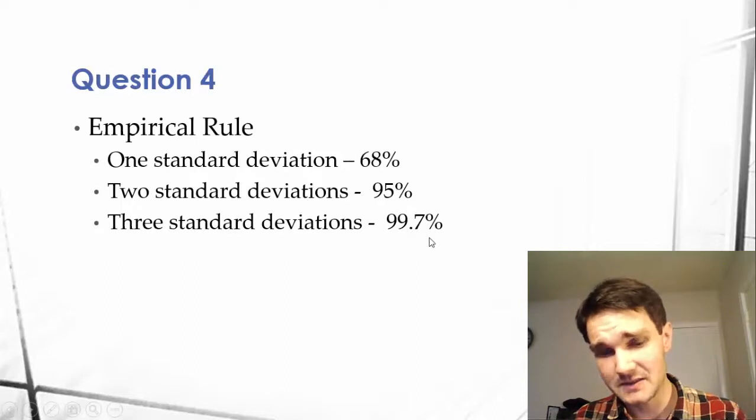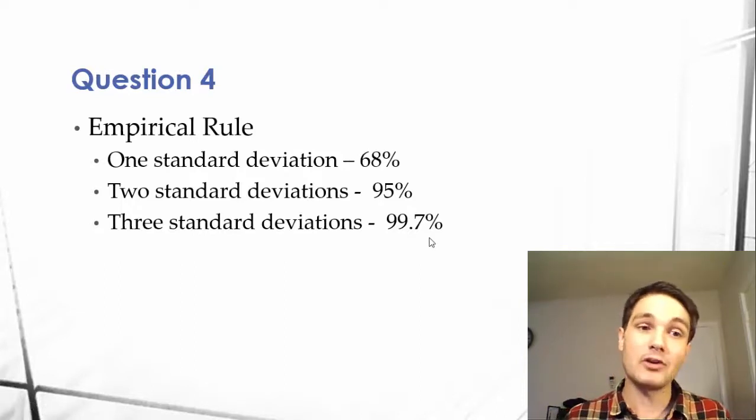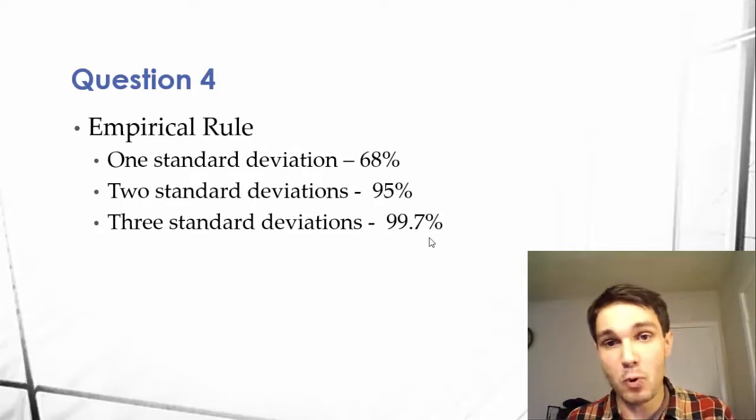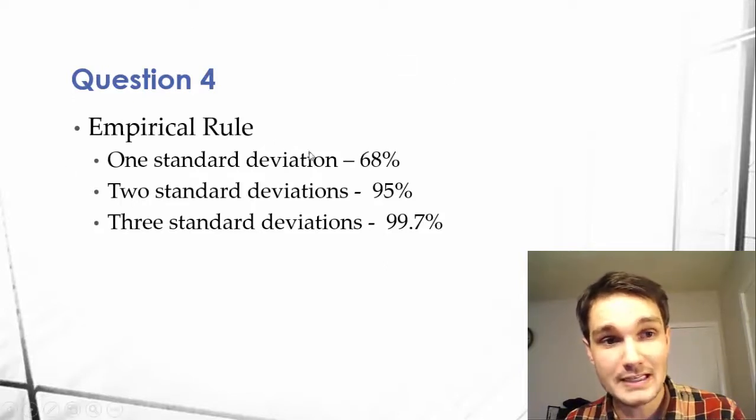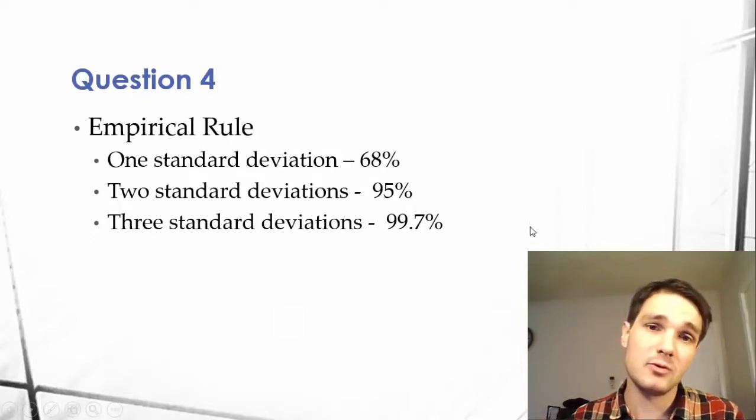So this makes perfect sense. As we grow the amount of acceptable deviation, more of the data will fall within it. So we just have to memorize this. That's part of your job. Just memorize the empirical rule.